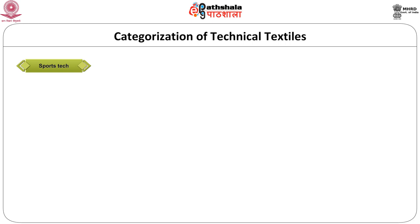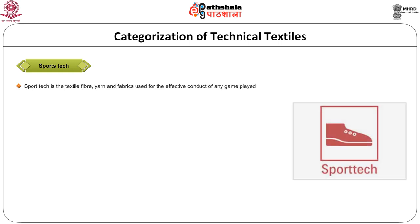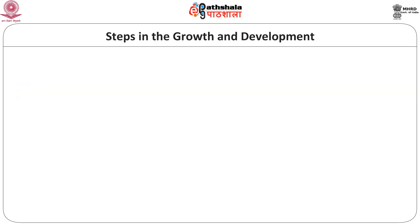The next category is sport tech. This includes textile fiber, yarns and fabrics used in all kinds of games and sports. It helps in effective conduct of any game played. Some items are shoes, nets, balls, bats, and dresses, designed for the comfort and movement of the sport player. This is symbolically indicated by a shoe. You can see examples of artificial turf and sails cloth in sport tech.